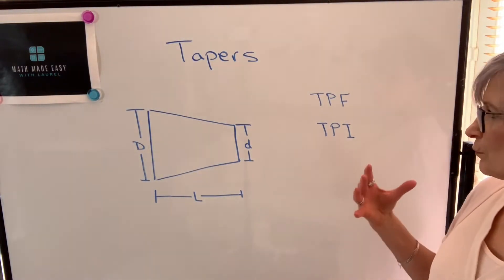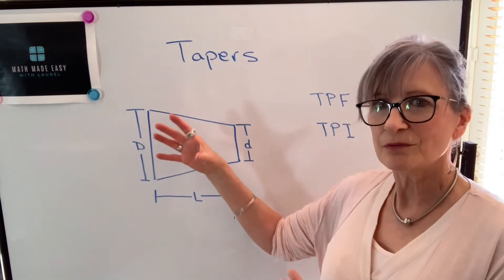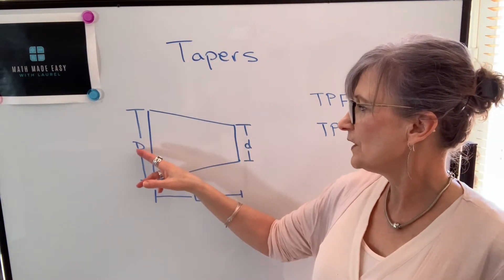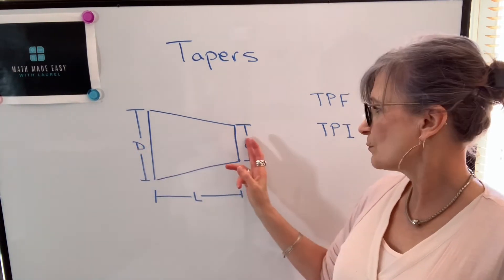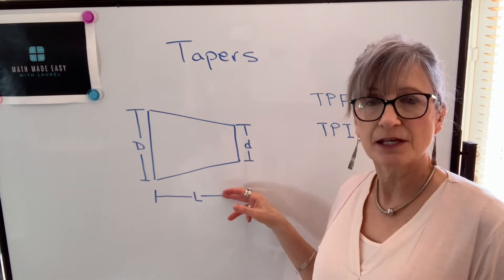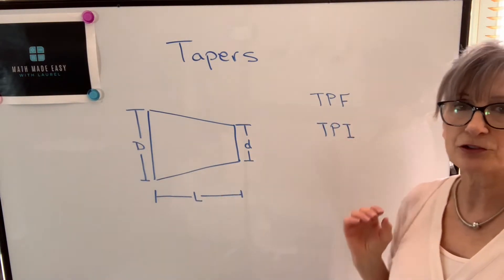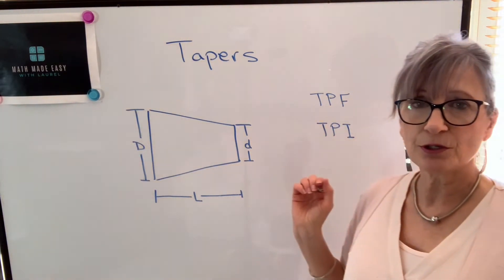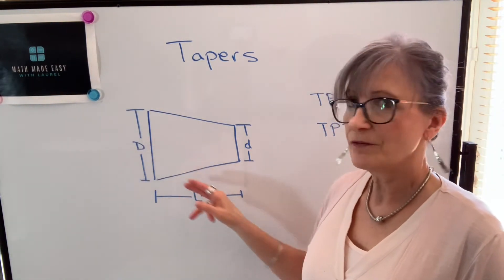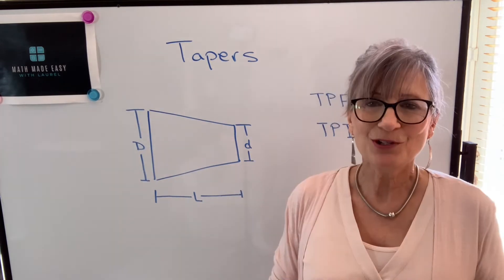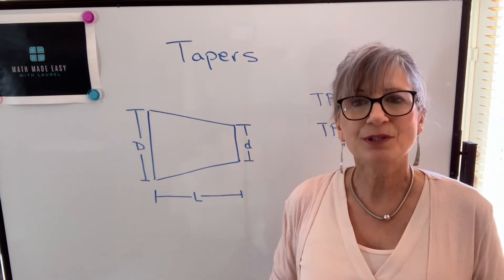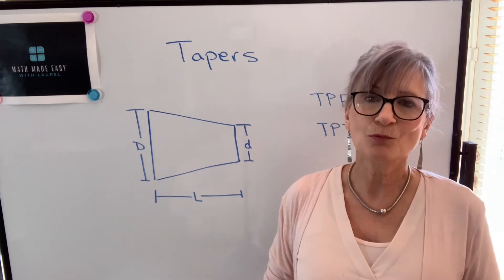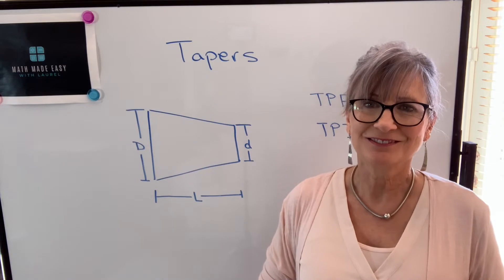When you're working with tapers, you will know different pieces of information. Typically, you'd probably know the large diameter, the small diameter, and the length of the piece, and then you might be asked to find taper per foot or taper per inch. You could also be told one of these rates of taper and be asked to find one of those three things. I want to do a couple of different examples to show you that we're simply going to use direct proportion, no matter what information is given and what is asked. Let's take a look.